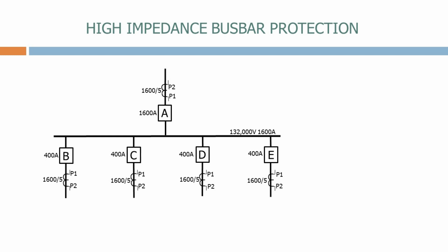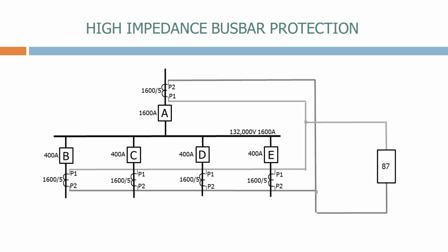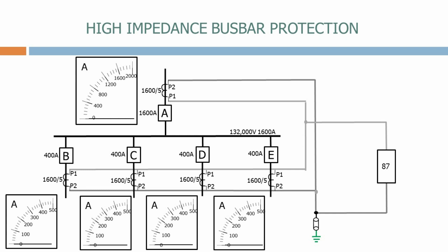The next thing we do is to connect all of the current transformers in parallel and feed them into the high impedance busbar protection relay. We ground one side of the ring to provide a reference point and prevent harmful voltages appearing on the circuit.